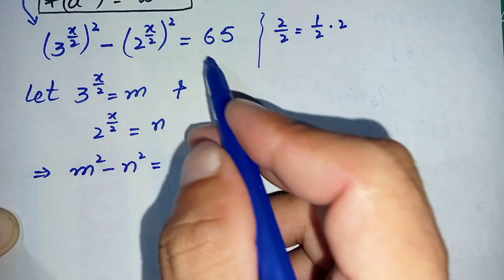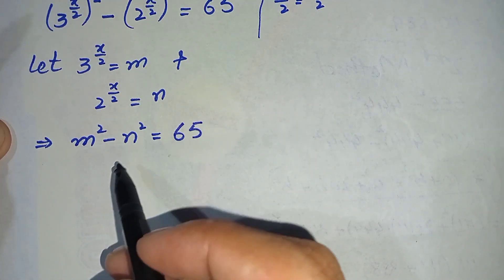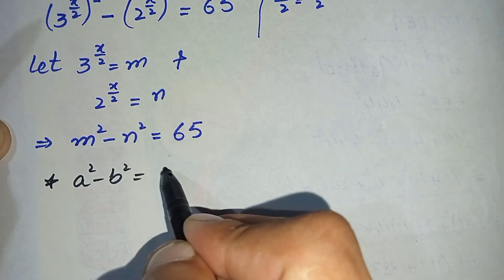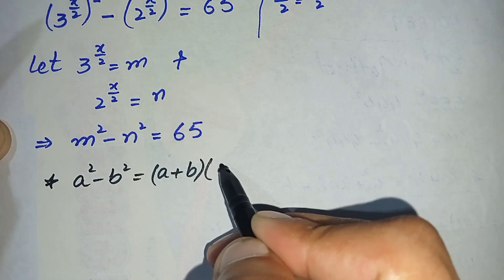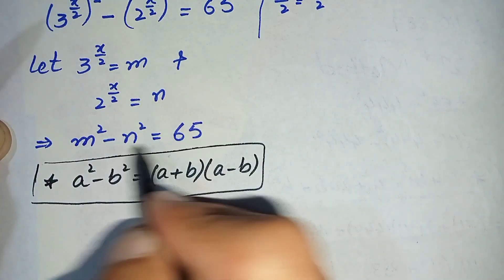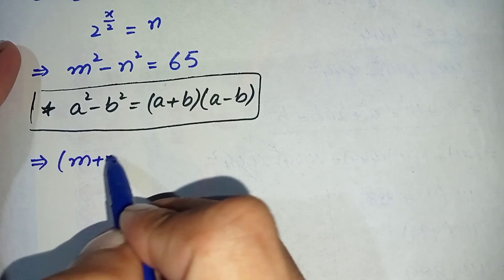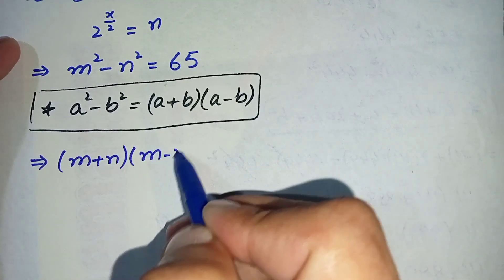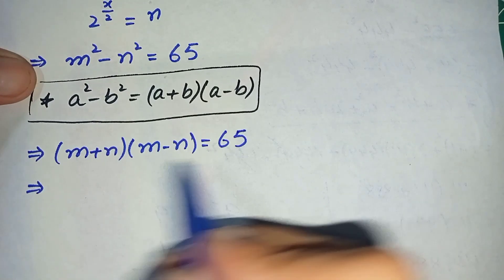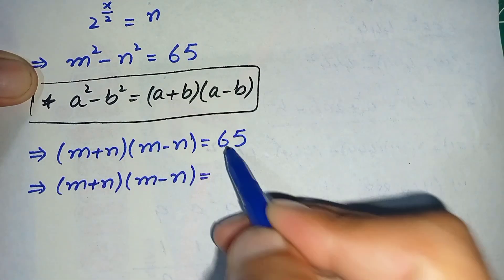Here we will use the algebraic identity: a squared minus b squared is equal to (a + b)(a − b). Applying this identity to our equation, it becomes: (m + n)(m − n) is equal to 65.